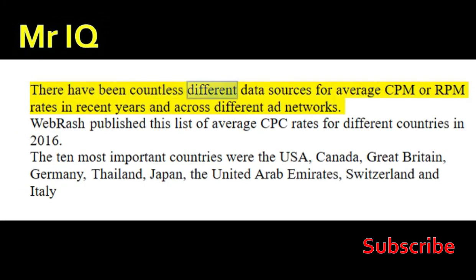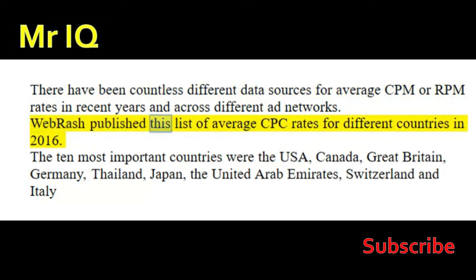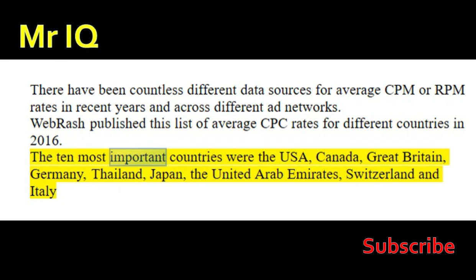There have been countless different data sources for average CPM or RPM rates in recent years across different ad networks. WebRash published a list of average CPC rates for different countries in 2016. The 10 most important countries were the USA, Canada, Great Britain, Germany, Thailand, Japan, the United Arab Emirates, Switzerland, and Italy.